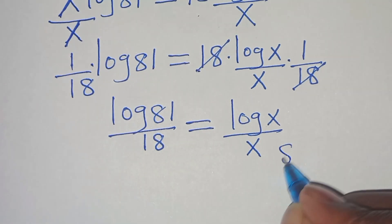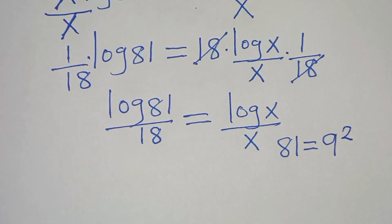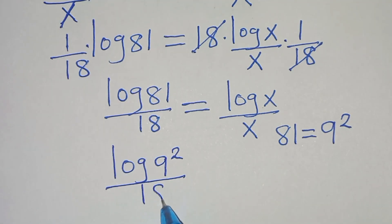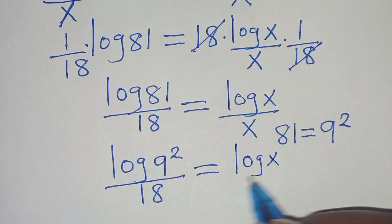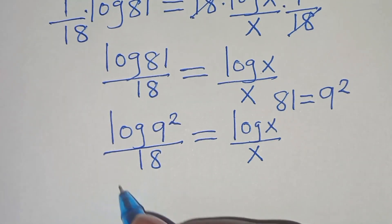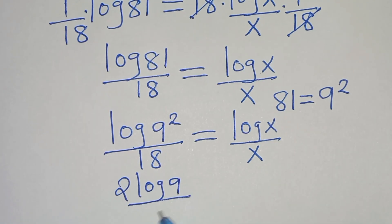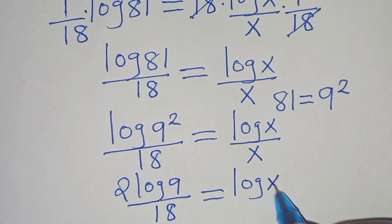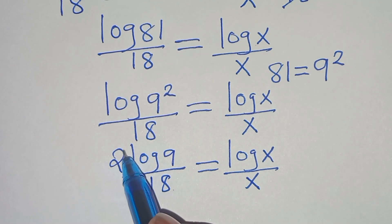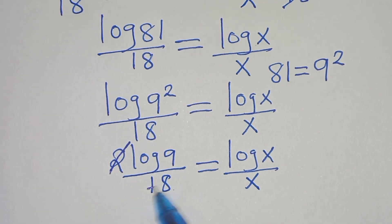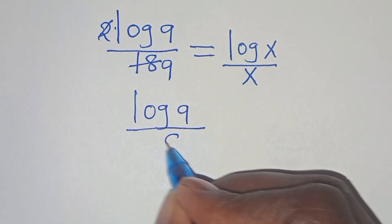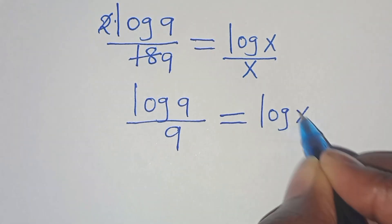Now we can express 81 as 9 to the power of 2. Substituting, we have log(9²) divided by 18 equals log x divided by x. Applying the power property, log(9²) becomes 2·log 9 divided by 18. We can simplify: 2 divided by 2 is 1, and 18 divided by 2 is 9. So we get log 9 divided by 9, which equals log x divided by x.